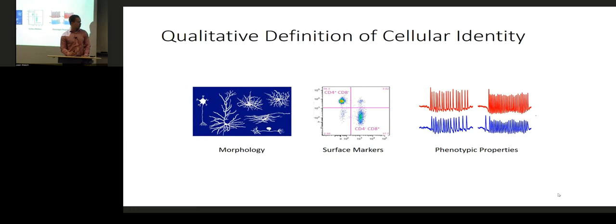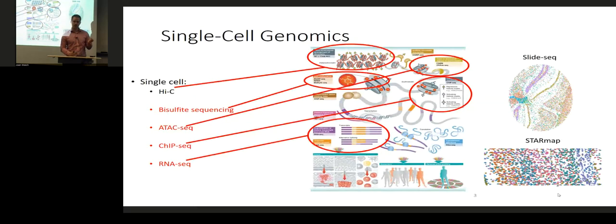Traditional qualitative approaches also rely on surface markers — painstakingly characterizing a handful of surface markers whose presence or absence decides whether a cell is of type A or B — or phenotypic properties, like a neuron's firing pattern. Based on some ad hoc combination of these qualitative properties, biologists have traditionally defined cell types. But now with the invention of various single-cell genomic technologies, we have the opportunity to revisit the definition of cell type from a quantitative perspective.